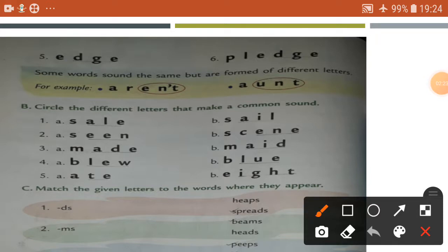DGE edge, circle. Number six, page DGE consonant sound. Some words sound the same but are formed of different letters. For example, aren't C-E-N-T and aren't A-U-N-T.